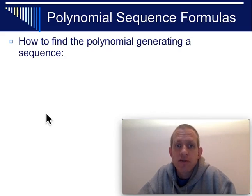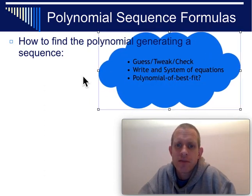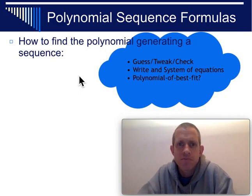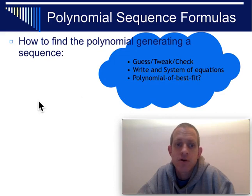How do you find the polynomial that generates one of these sorts of sequences? It's a couple different strategies you could try. You could just guess the formula and kind of tweak it and check it and try and so forth. And that might work if it's a simple enough polynomial sequence. Generally, that's not the best strategy. And so, another alternative is you can write a system of equations and then solve it.